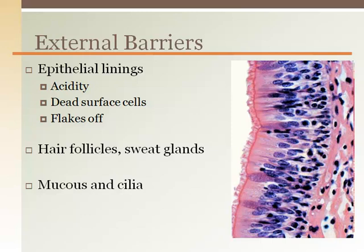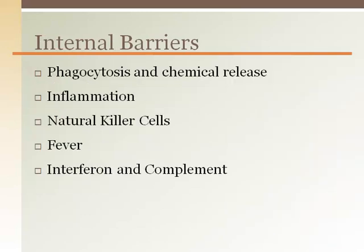These dead surface cells also flake off, so the antigen will just fly away. These important and basic features of our skin are one reason why burn victims are so severely susceptible to infection. Hair follicles and sweat glands also prevent the entrance of antigens. Mucus traps incoming antigens, and cilia, such as along the respiratory tract, effectively move the antigen-stuck mucus up and out like an escalator.